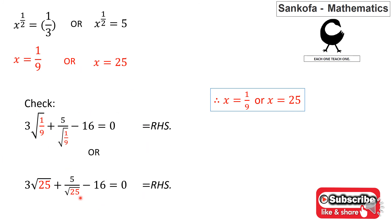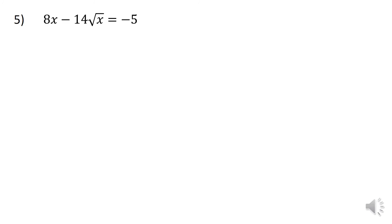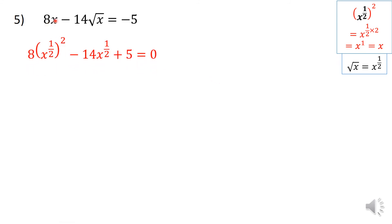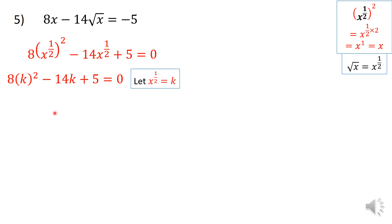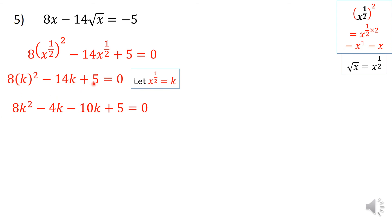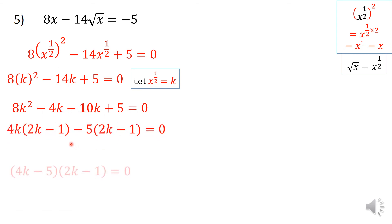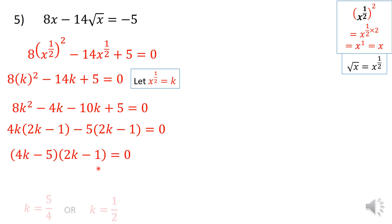Question 5: 8x minus 14 times the square root of x equals negative 5. Using the same approach, I write x as x to the power of a half squared, and the square root of x as x to the power of a half, then substitute k. I look for two numbers that multiply to give 40 (which is 8 times 5) and add to give negative 14 — those are negative 4 and negative 10. Factorizing and grouping gives 4k minus 5 times 2k minus 1 equals 0.